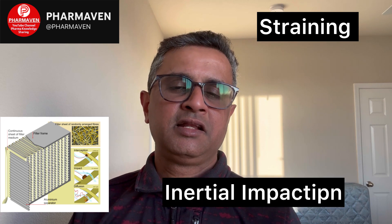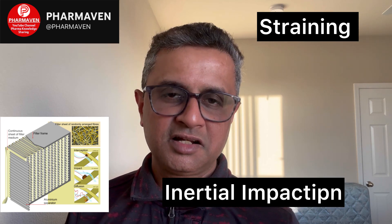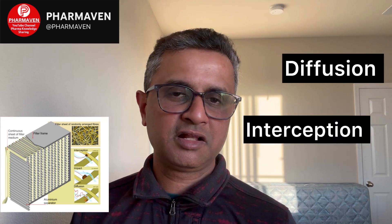So, a HEPA filter rated at 0.3 micron removes bacteria and particles even smaller than 0.3 micron through four mechanisms: straining, inertial impaction, interception, and diffusion. These are the four mechanisms by which a HEPA filter removes particles and microorganisms of various sizes from the air when air is passed through it.